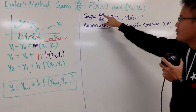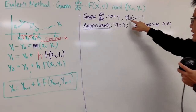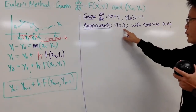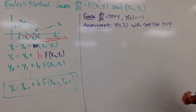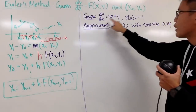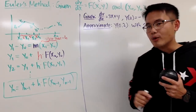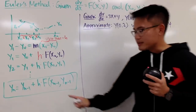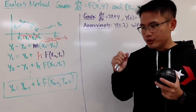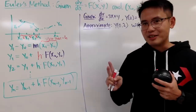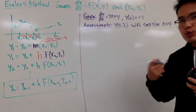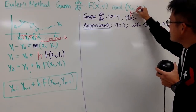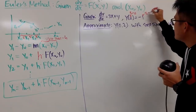Here is an example. We are given that dy/dx is equal to 3x plus y, and the initial condition is y(0) equals negative 1. We are going to approximate y(0.2) with step size 0.04. This right here is not separable, but it's still doable — you would have to use a technique called the integrating factor. But in this video I will show you guys how to work this out. The main thing is that you need to have patience and organization.